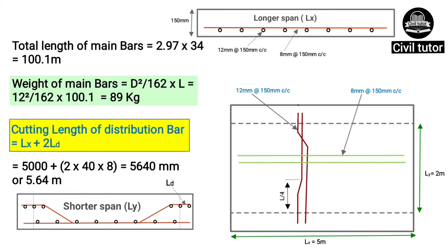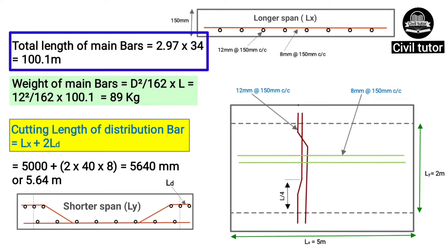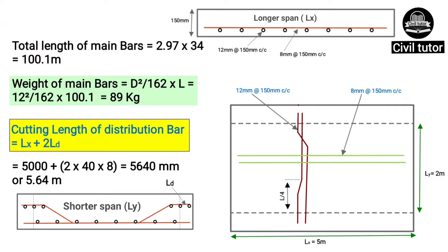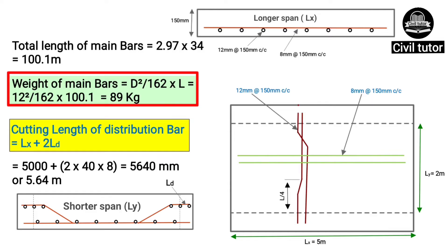Total length of main bars = cutting length of one bar (2.97m) × number of bars (34) = 100.1m. To calculate the weight of main bars, we use the formula: D² ÷ 162 × total length of main bars. D is the diameter = 12mm and total length = 100.1m. On substituting these values, the weight of main bars = 89kg.